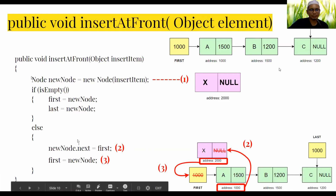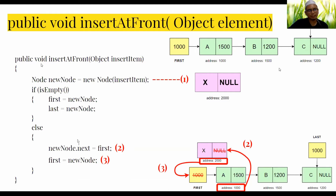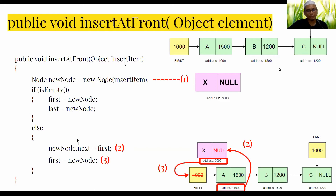Looking at the algorithm: the method is void, named insertAtFront, with one parameter of type Object. First, it creates a new node that will store the new data. The new data will be stored into the new node object.